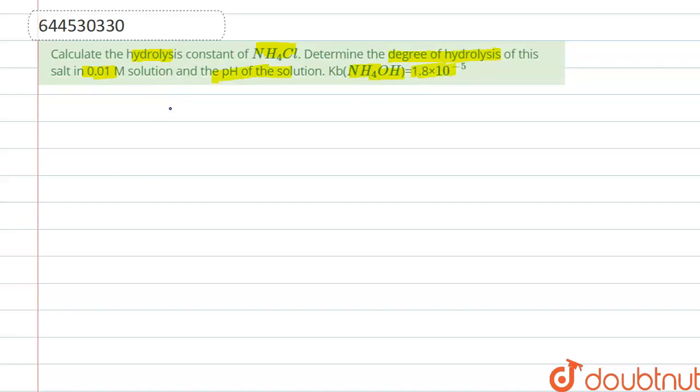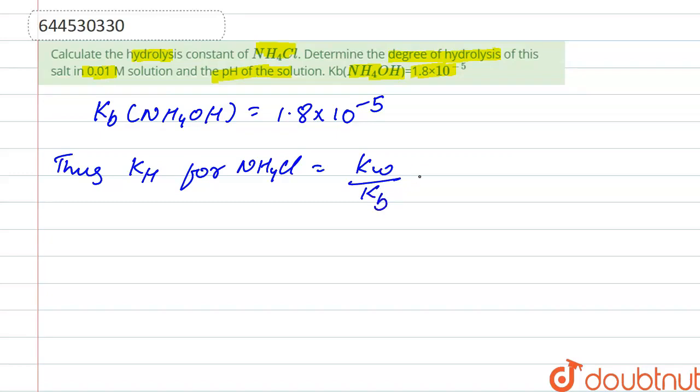Given that Kb of NH4OH is 1.8 into 10 to the power minus 5. Thus, we calculate Kh for NH4Cl, which is Kw upon Kb.